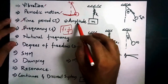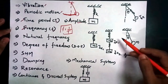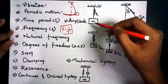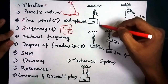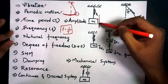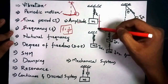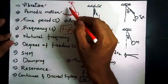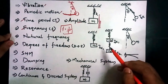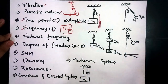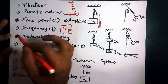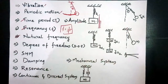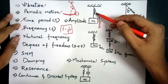Amplitude is the maximum displacement from the mean position. In a spring-mass system that vibrates, the amplitude is the maximum displacement from the mean position to the extreme position. The next very important term is natural frequency, which is related to the concept of a spring-mass system.